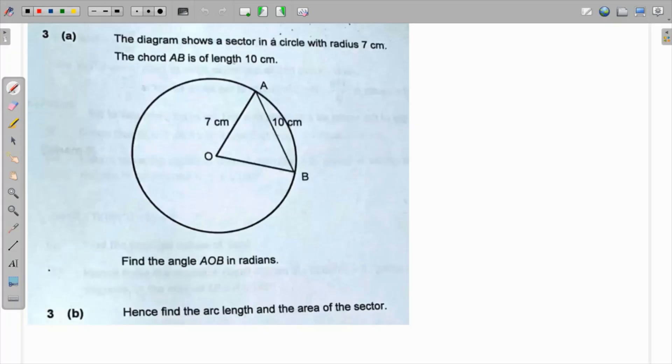In this question we are given a diagram that shows a sector in a circle with radius of 7cm. If this is the radius, then definitely this is also the radius because this is the center and this is the point on the circle, so this is also 7 centimeters. The chord length is 10 centimeters.